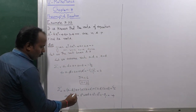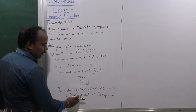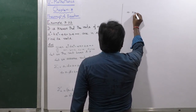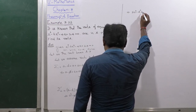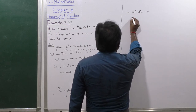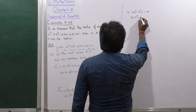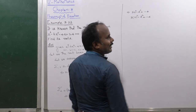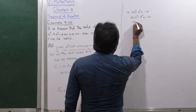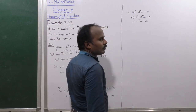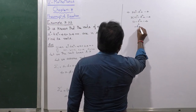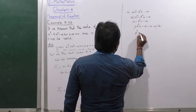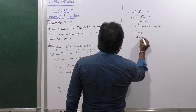The ±AD terms cancel, giving 3A² - D² = -4. Substituting A = 2: 3(2²) - D² = -4, so 12 - D² = -4. Therefore D² = 12 + 4 = 16, and D = ±4.